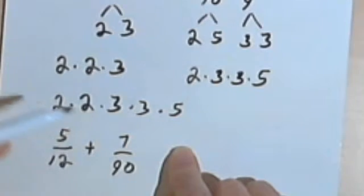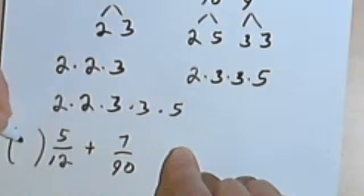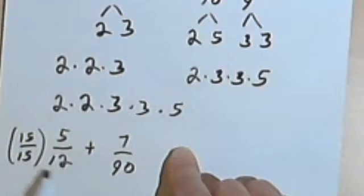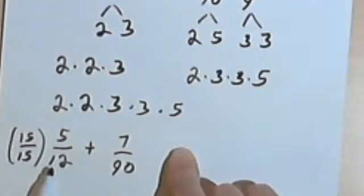So 3 times 5 is 15. I'm just going to use that 3 and 5, the 15, so I can know what to multiply by.